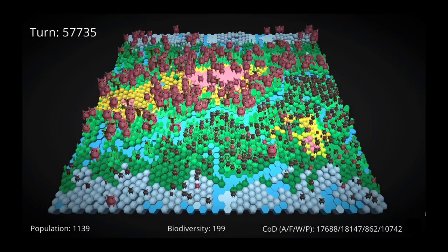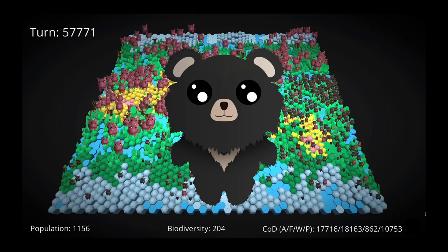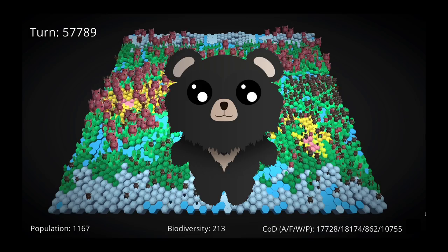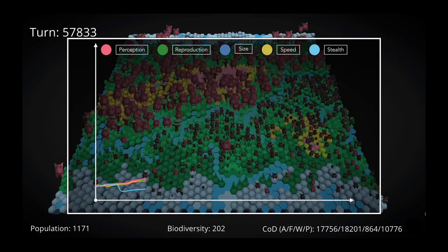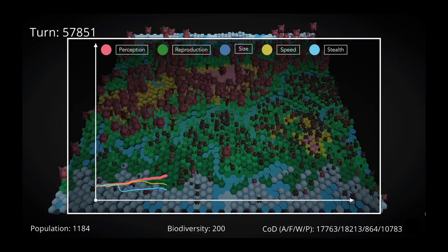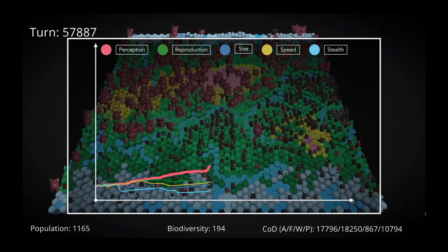There were early hints that something else was going on. We first saw bears get a significant foothold around turn 57,000, and they popped up again and again throughout the simulation. When we saw this, we should have thought about perception. Bears have some of the keenest senses in the animal kingdom, including a sense of smell that's seven times better than a bloodhound. Looking at the data, we can see that perception was on the rise for essentially the entire simulation.